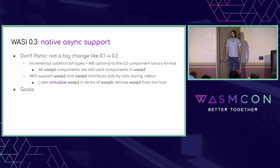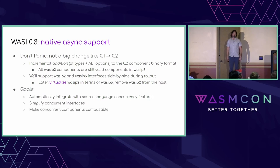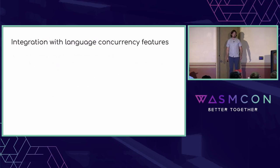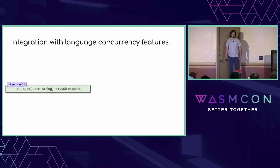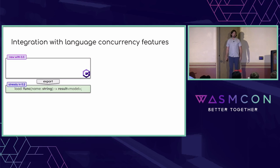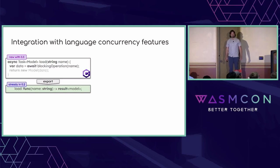Our goals with native async support are to automatically integrate with source language concurrency features, simplify concurrent interfaces, and make concurrent components composable. Starting with language integration: already in WASI 0.2, I can declare a function 'load' that loads a model from a name string and implement it with synchronous functions in various languages. But starting in 0.3, I can implement this with async functions. In C#, for example, I'd be able to implement load as an async task-returning function that can await a blocking operation before returning its new model.